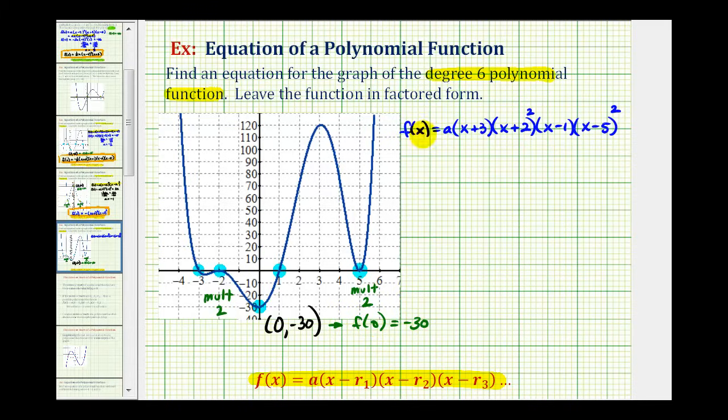Now we'll substitute zero for x and set the function value equal to -30, which will allow us to solve for a. f(0) = a(3)(2²)(-1)(-5²) = -30.